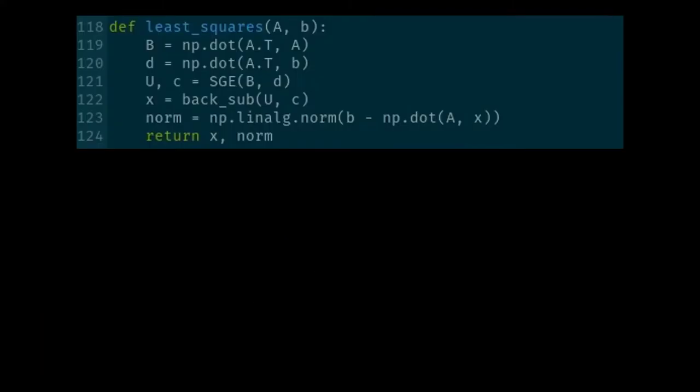So let's talk computer code. After all, this is computational linear algebra, and as usual, all the code will be linked in the description down below in the Computational Linear Algebra repository. We're working in the 10th episode directory, and we're starting off in our lin-alge package. You can see I have defined a new function in line 118 called least squares that accepts an A matrix and a B vector.